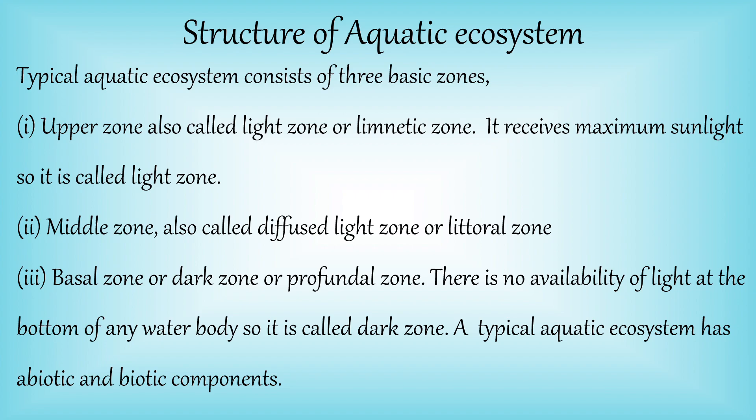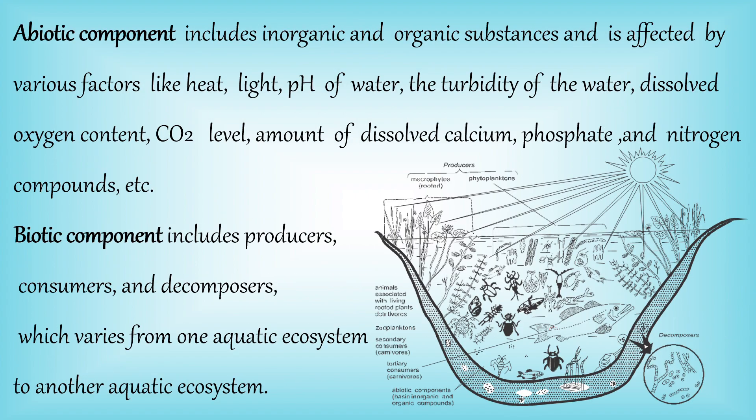Any aquatic ecosystem has two basic components: abiotic and biotic components. In this diagram you can see the upper zone receiving maximum sunlight, the middle zone receiving diffuse sunlight, and at the base it is the profundal zone.